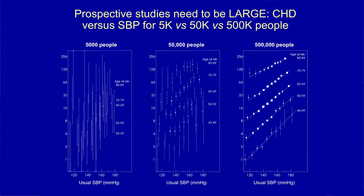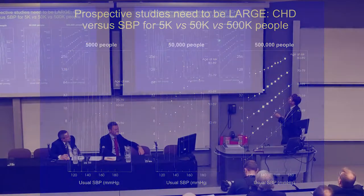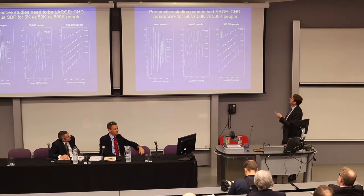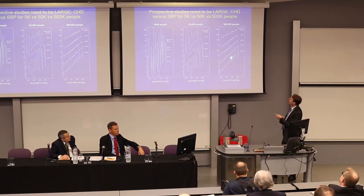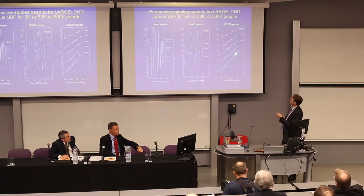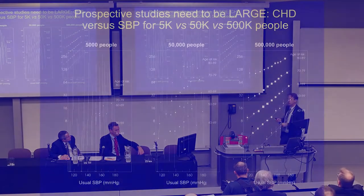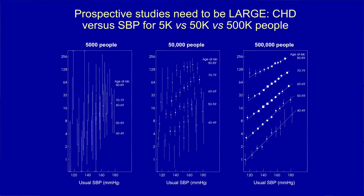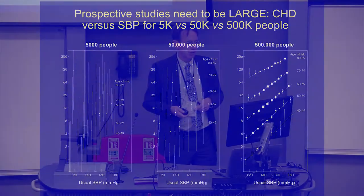With half a million individuals you get beautiful log-linear associations. On a doubling scale, the associations are steeper at younger ages — a stronger relative risk interaction — but the absolute risk is obviously higher at older age, so in absolute terms the interaction goes the other way. You see these continuous relationships, illustrating the power of scale.